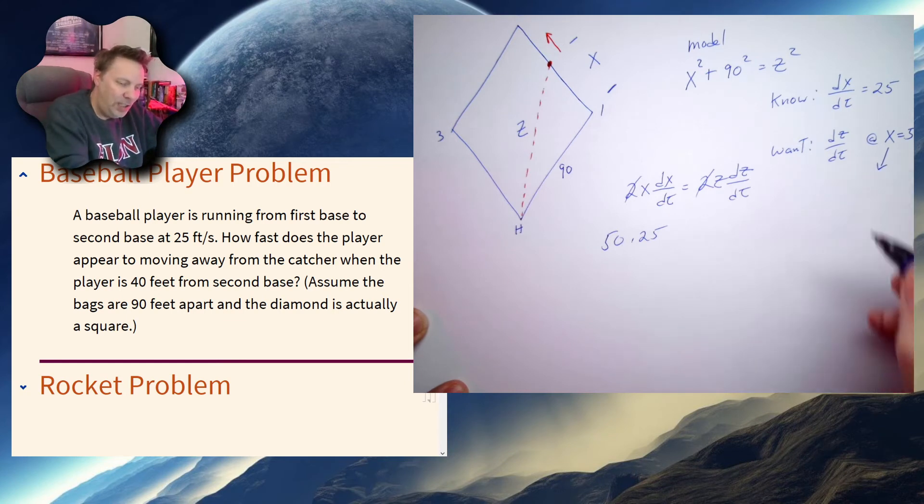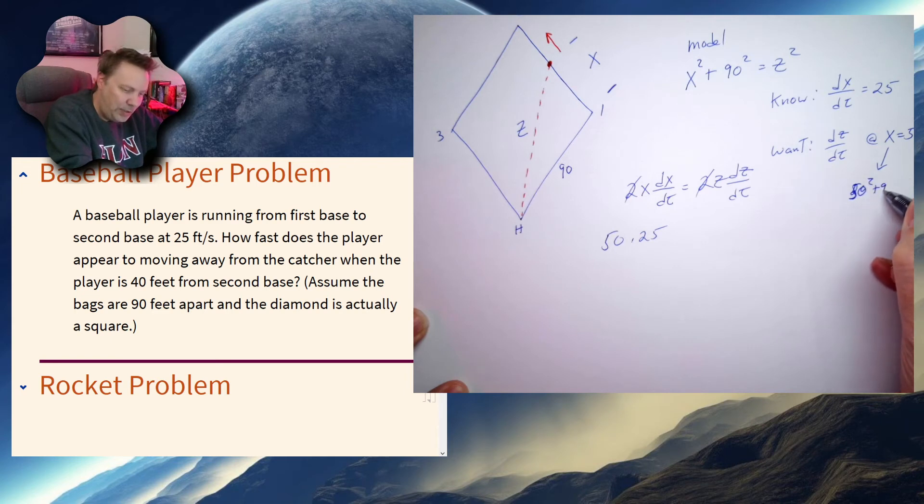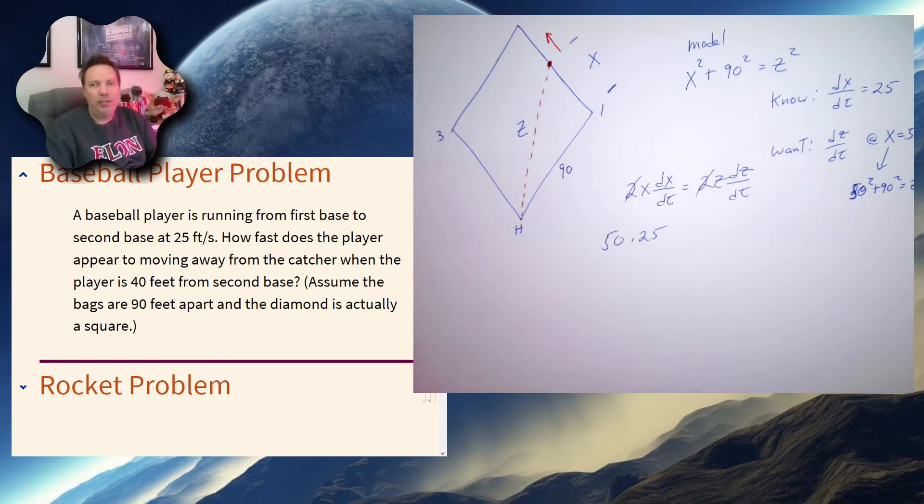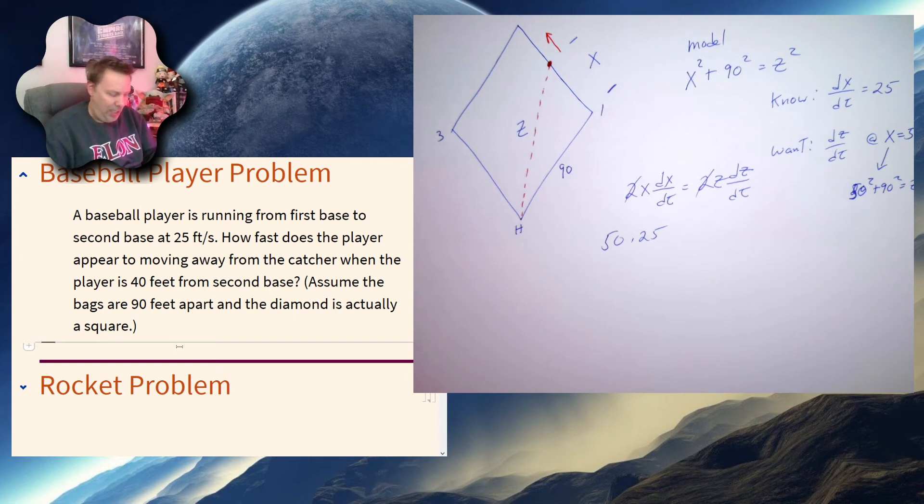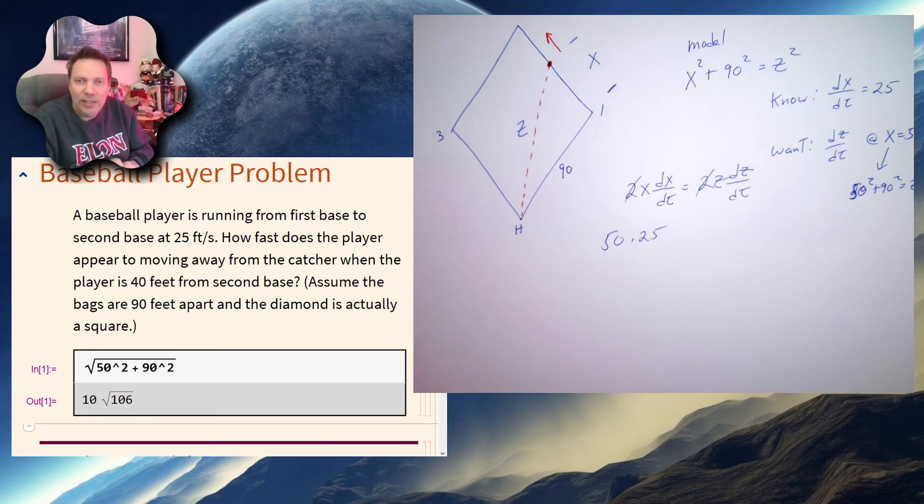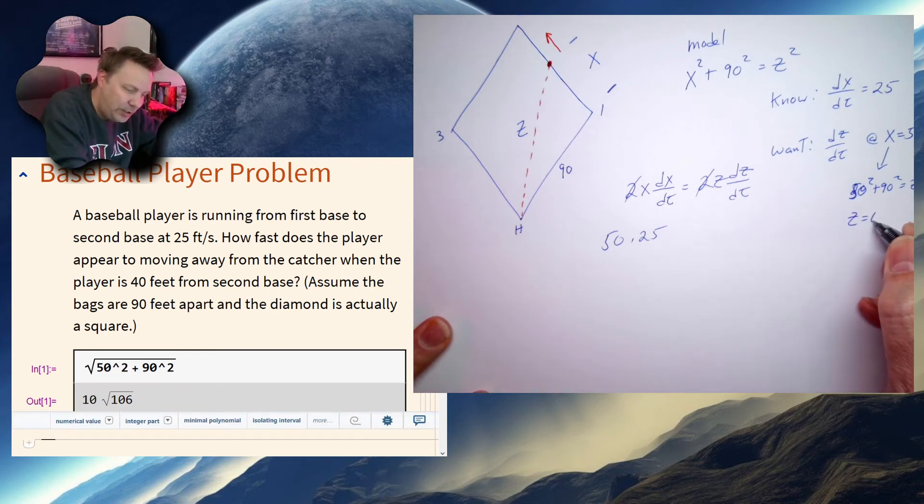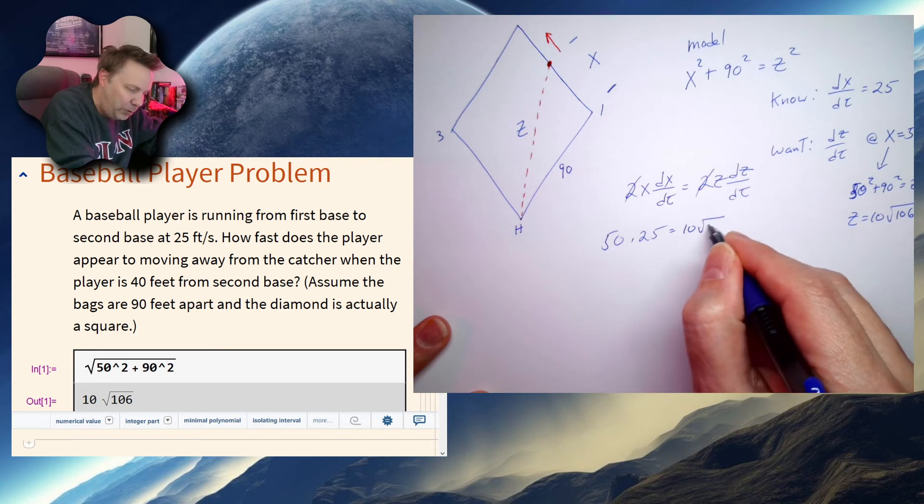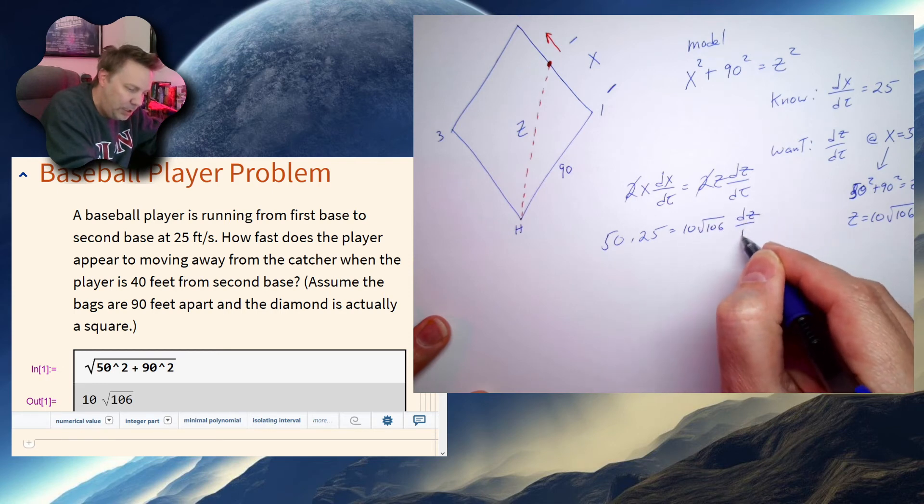Well, when x is equal to 50, I know that 50 squared plus 90 squared is equal to z squared. So very quickly, I'm going to jump into mathematics very quickly here. I'm going to take a square root of 50 squared plus 90 squared, and let's see, 10 root 106. So z turns out to be 10 root 106.